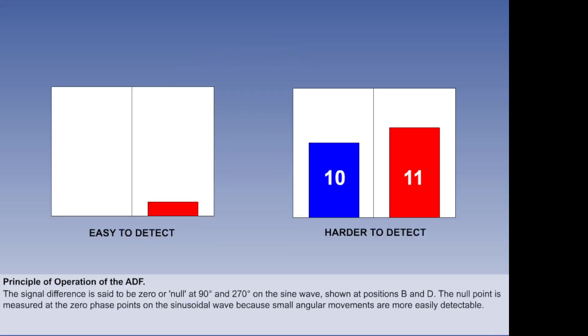The null point is chosen over any other phase as a datum point, because small angular movements from zero produce a greater electrical response and are therefore more detectable than an increase to an existing response.